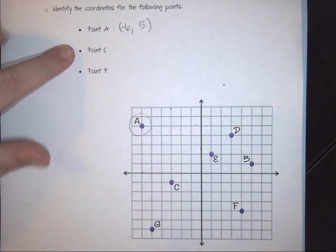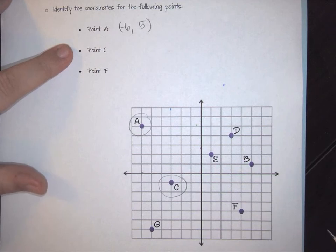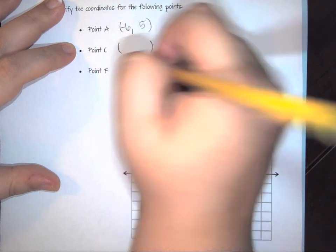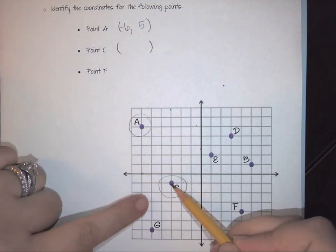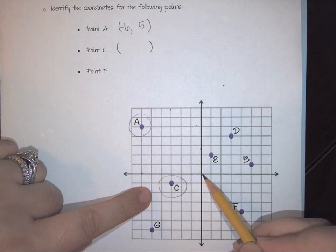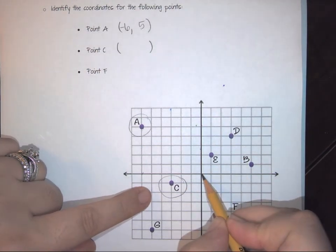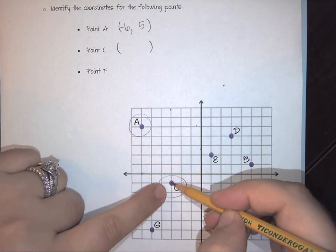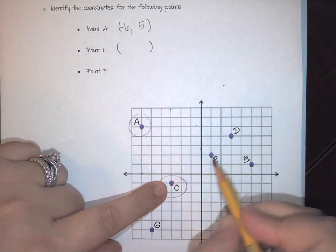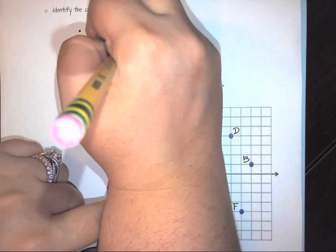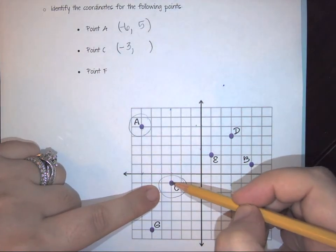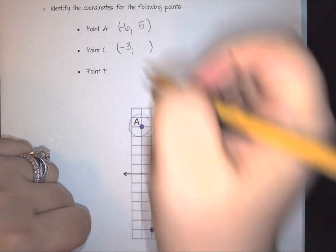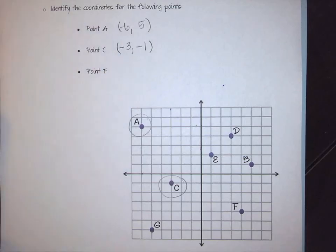For point C, we open our parentheses and count from the origin along the x-axis: one, two, three — I'm right at my point, so I've gone three, but in the left direction, so it's negative three. Then I need to drop down just one to get to C, and because I'm going down it's also negative. So point C is (negative 3, negative 1).